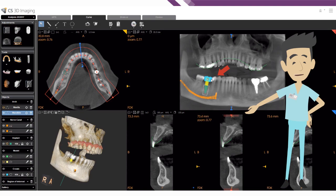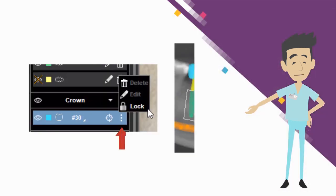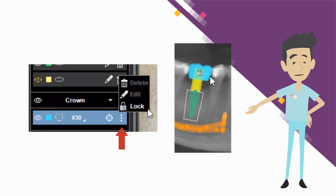When an object is placed inside the volume, click on the three dots inside the toolbox and select lock. A padlock appears over the object in the image. The object cannot be moved until unlocked.